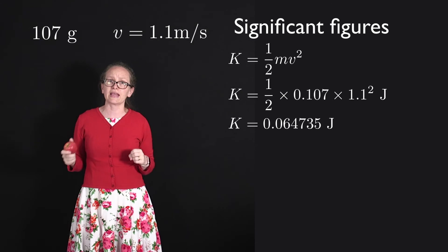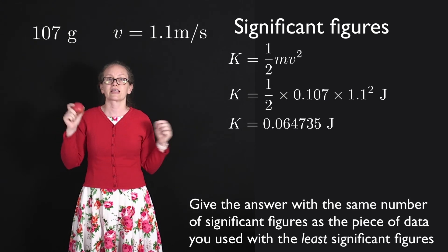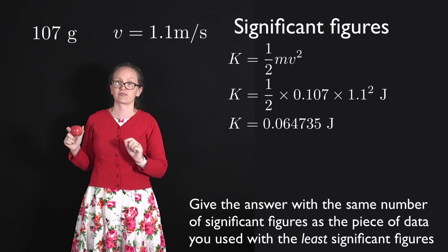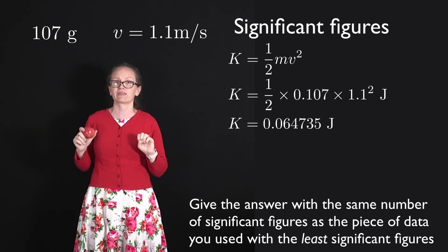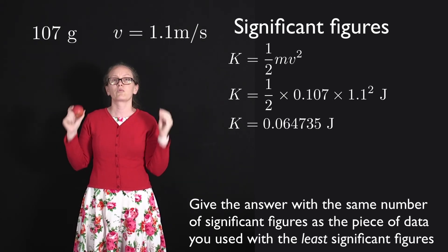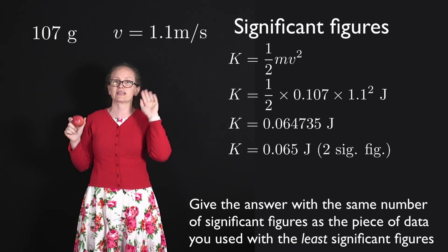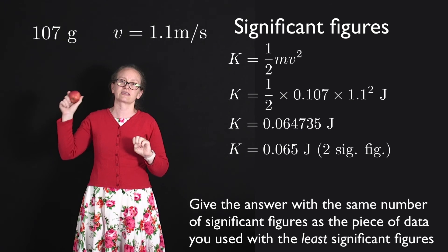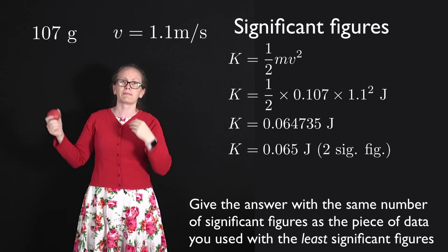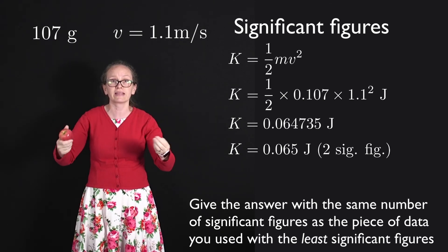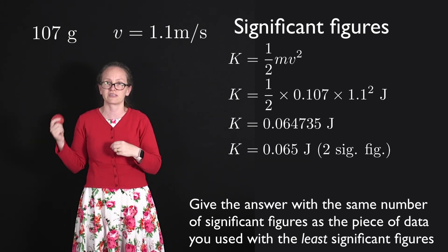So the rule of thumb is that in a calculation, you should give the answer with the same number of significant figures as the piece of data you used with the least number of significant figures. So for our kinetic energy, because we used mass with three significant figures and velocity with two significant figures, we'd want to give the kinetic energy also with two significant figures. So we'd write the kinetic energy as K is equal to 0.065 joules. And I'd put in brackets after that two sig fig, just to remind myself to give it with the right number of significant figures, and also if I was submitting this to indicate to the marker that I have considered the number of significant figures.